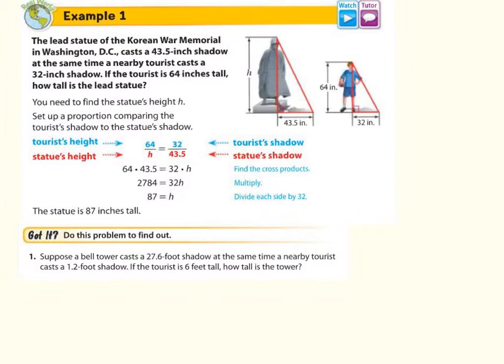So the first thing that we need to do is create the 27.6 foot shadow of the bell tower. So here's the bell tower. We need to find that height. And here's its shadow, 27.6 feet, so let's go ahead and make this a full-on triangle. So the height is what we need to determine. The human tourist has a shadow of 1.2 feet, and that tourist is 6 feet tall.